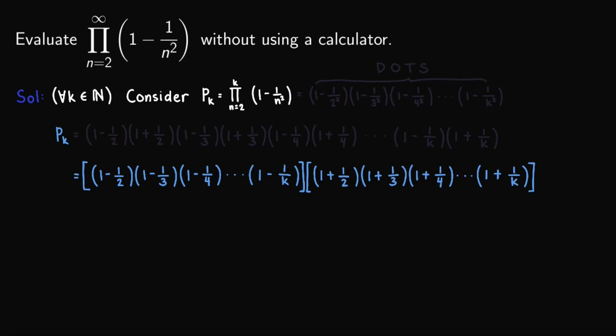Now from here, let's simplify the terms that we have, or the factors that we have. So we'll have first, 1 minus 1 half simplifies to, so this is just basic subtraction of fractions, so we'll have 1 half out here, 1 minus 1 third is equal to 2 thirds, 1 minus 1 fourth is 3 fourths, and so on until 1 minus 1 over k to be k minus 1 over k.